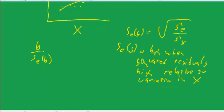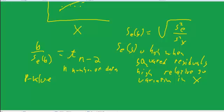This ratio of the coefficient to the standard error will have a t-distribution. It will have a t-distribution with, in this case, n - 2 degrees of freedom, where n is the number of data points or observations.